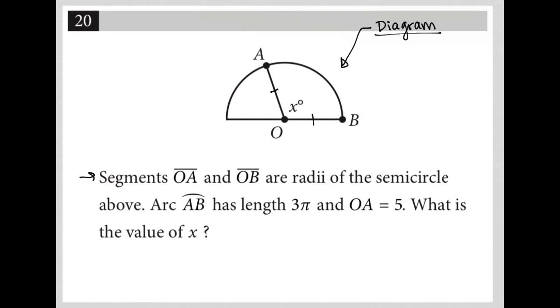Arc AB has length 3π. So I'm going to label this with 3π here. And OA is 5. So that means I'm going to label this with 5. But I'm also going to label OB as 5 because, again, they are the same. They're both radii.